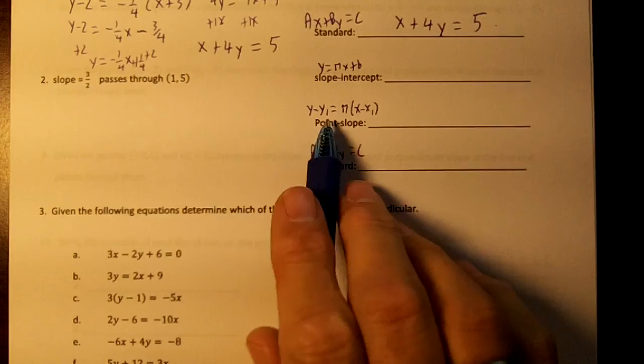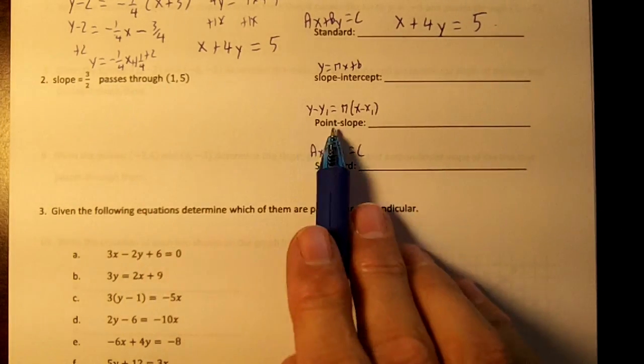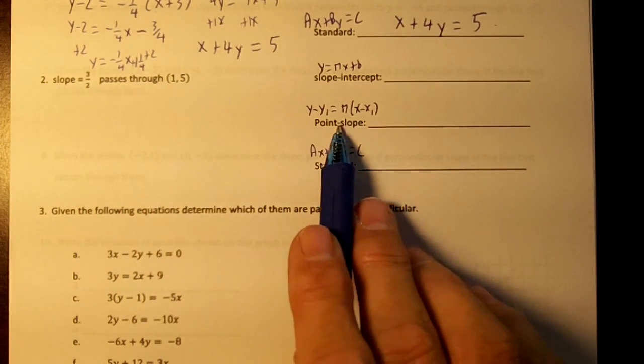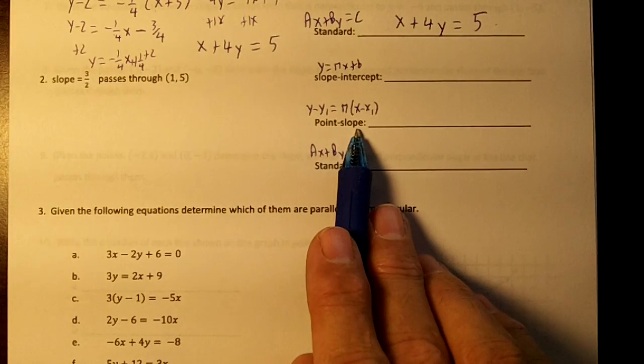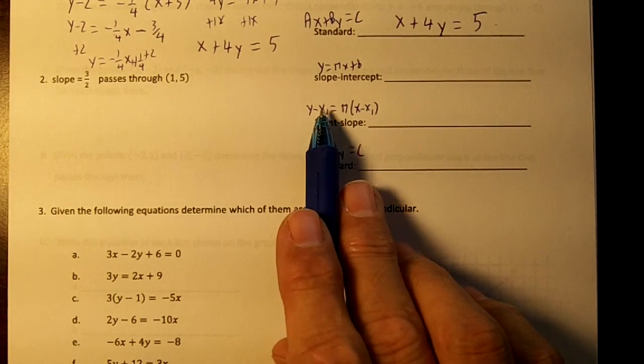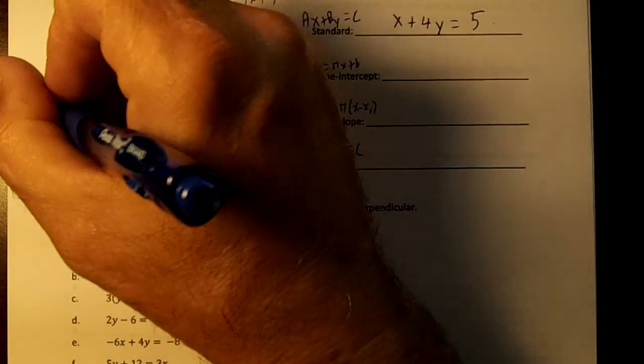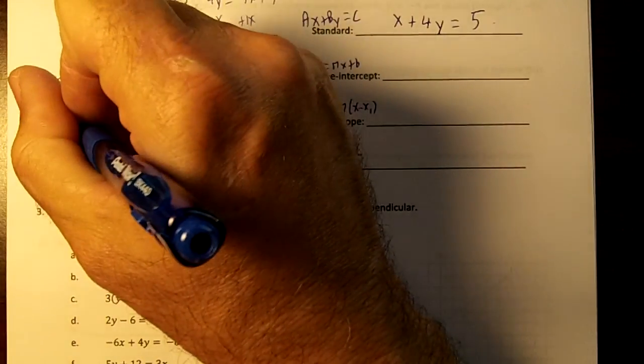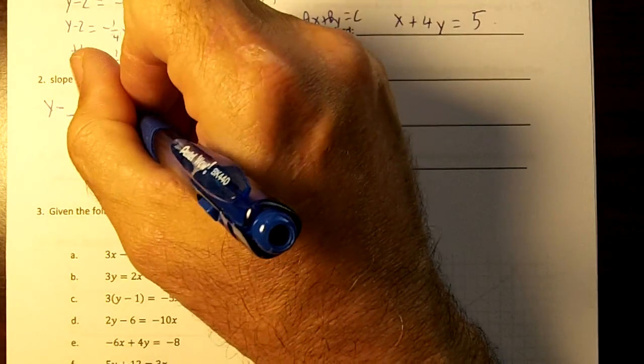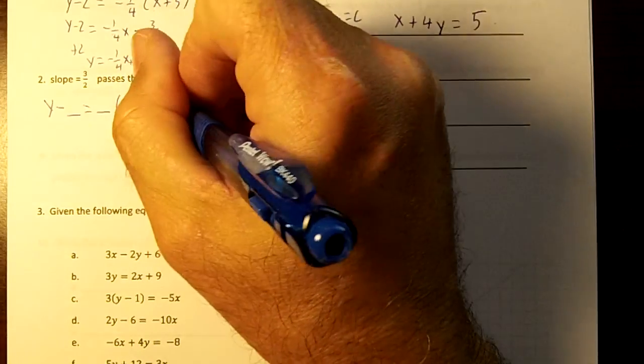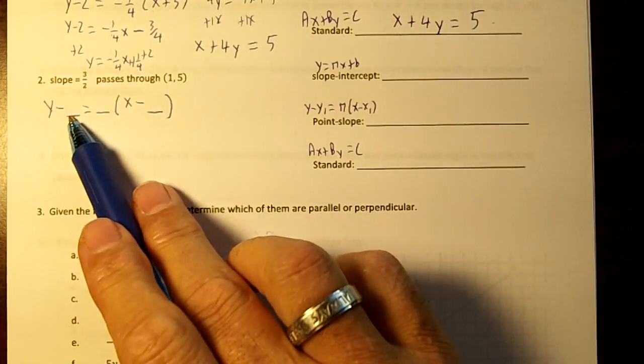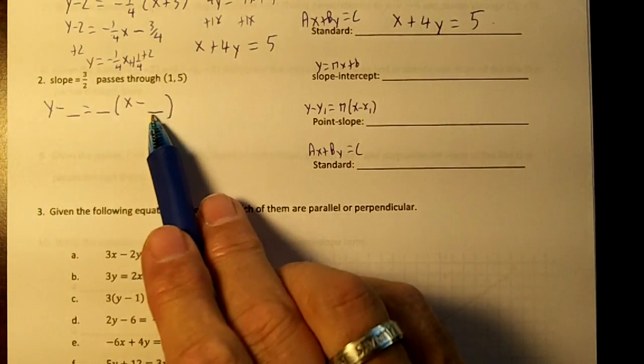Okay, so we're going to go over here. We are given a slope and a point, so you use point-slope form. If you're given a slope and a point, you use point-slope form. So we're going to replace the y1, the m, and the x1 with blanks. So go over here, y minus blank equals blank parentheses x minus blank. So we put our y1 here, our m here, and our x1 here.